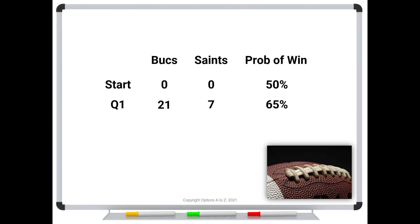Now let's flip it. The Bucks are ahead 21-7 at the end of the first quarter and you initially went from 50% to 65%. But instead, there's an increase in volatility — same score, same time, different conditions. Now yes, the Bucks could score more, but so can the Saints, and that's bad for us. Just like shrinking time to 30 seconds was beneficial when we're in the lead, we'd love to see volatility shrink to nothing too. But if volatility increases while we're ahead, that's actually bad — instead of going from 50% to 65%, you might only go from 50% to 55%. More time or more volatility reduces your deltas for in-the-money options.